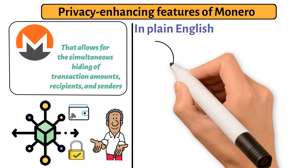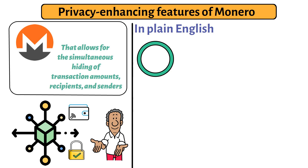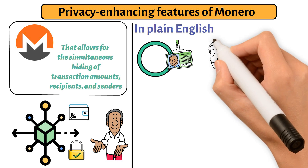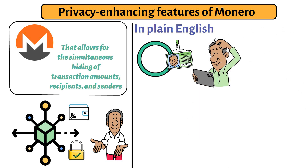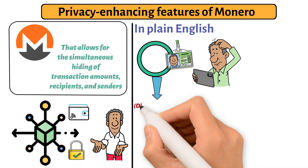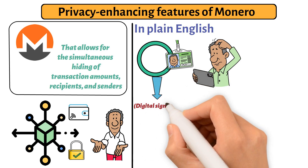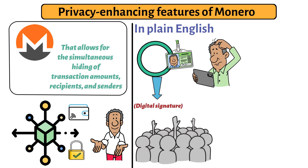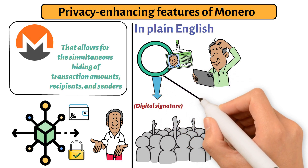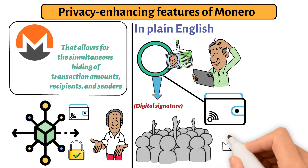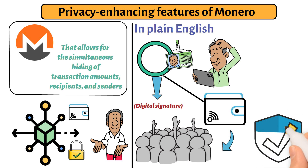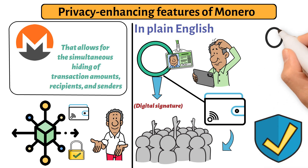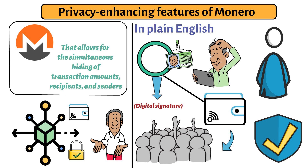In plain English, ring signatures are created by grouping several users into a ring to conceal their unique identities. This makes it challenging to identify the person who created a signature by sending cryptocurrency to a different address. A ring signature is a kind of digital signature used in cryptography that can be used by any user in a group. A transaction validated by a ring signature signifies that it has been approved by a member of a certain group. A ring signature's computational impossibility ascertains which group member utilized their crypto keys to sign the transaction, which is one of its security characteristics.